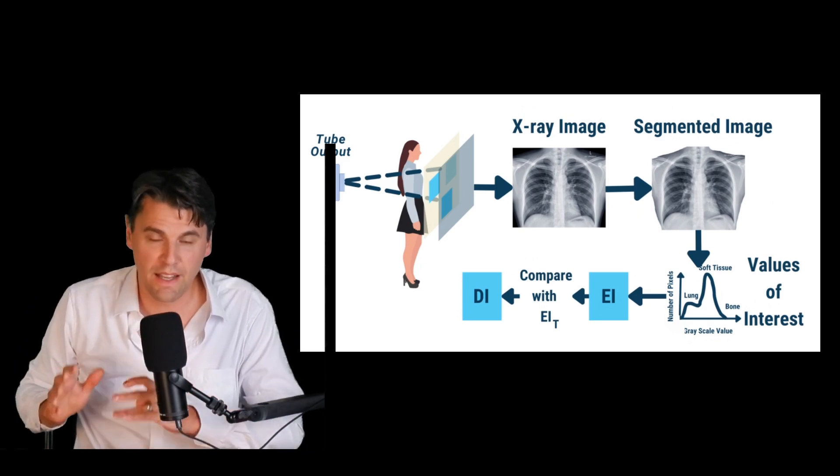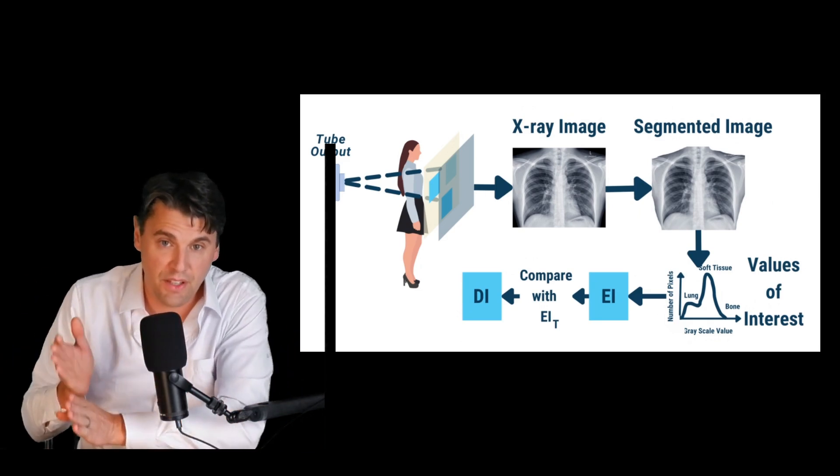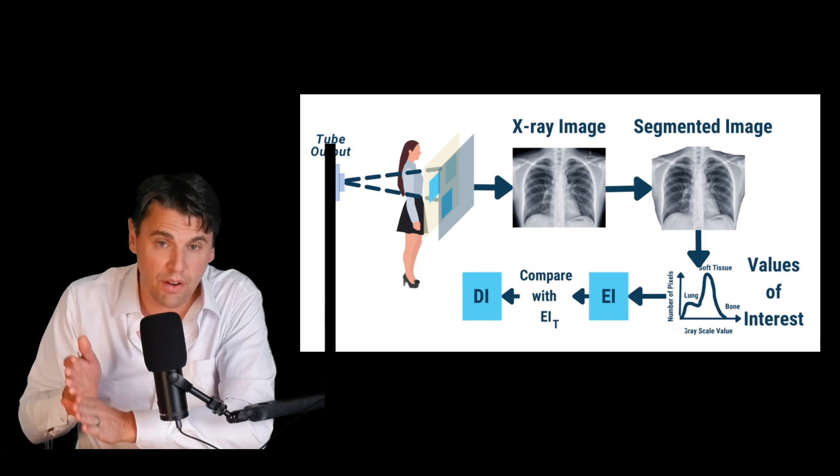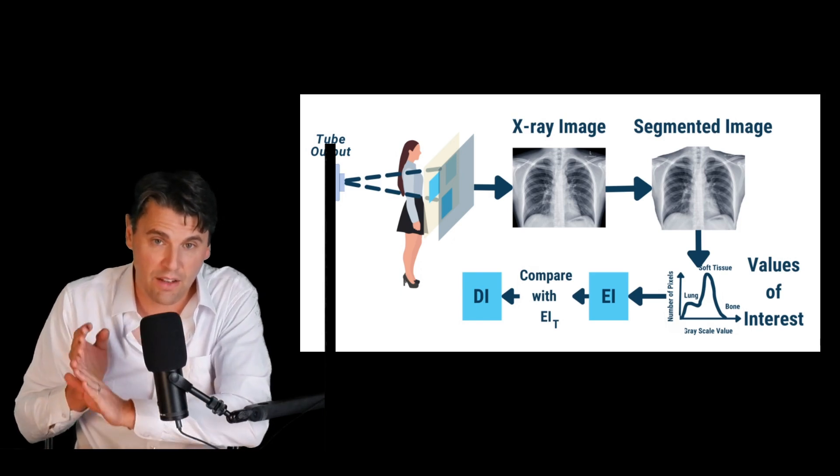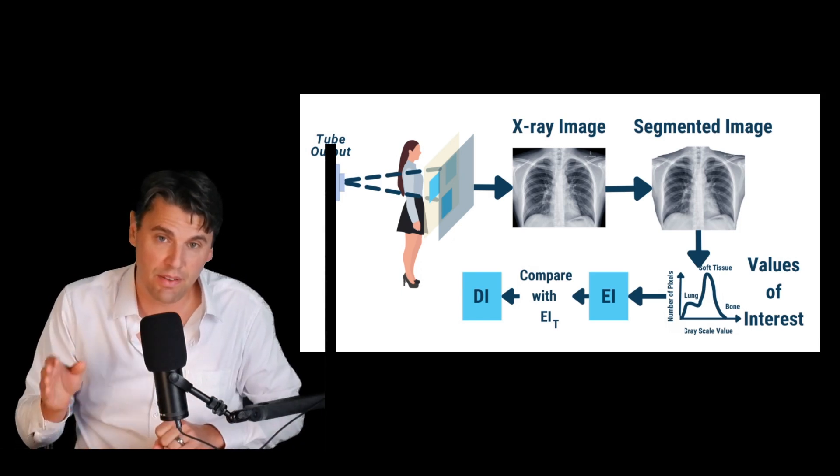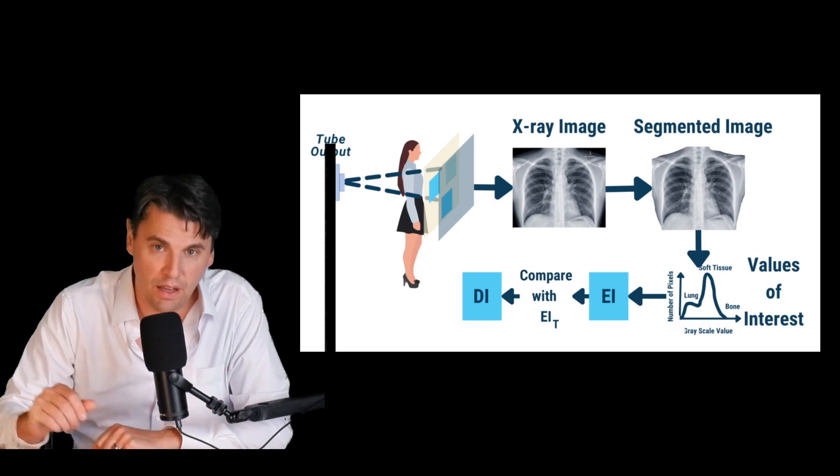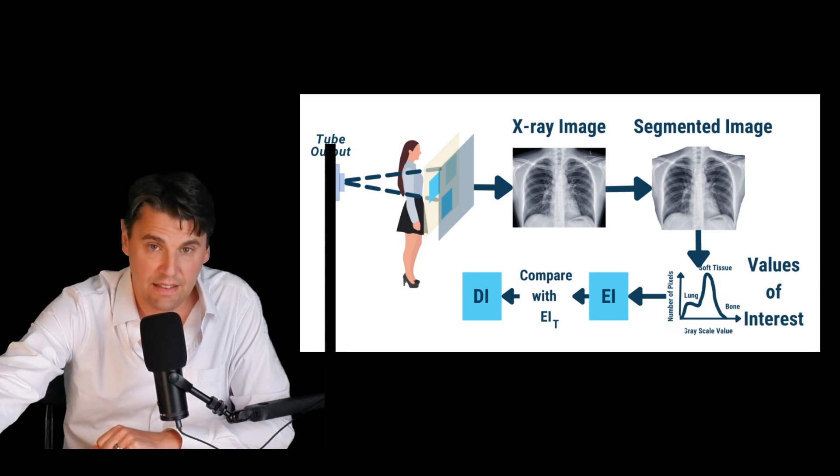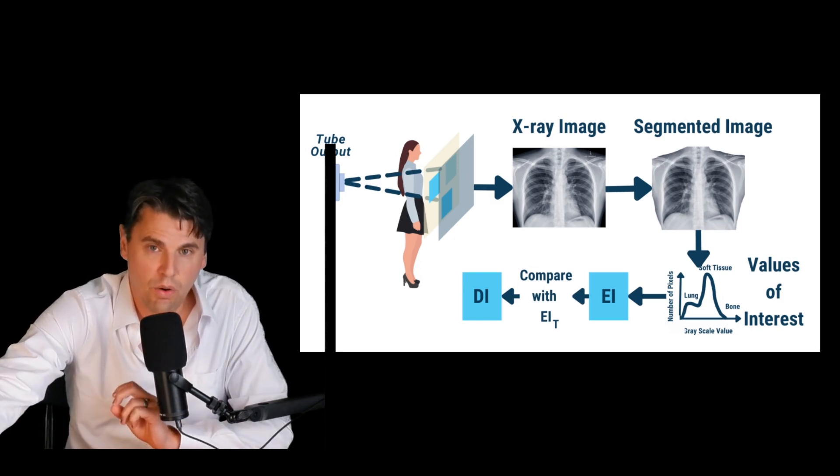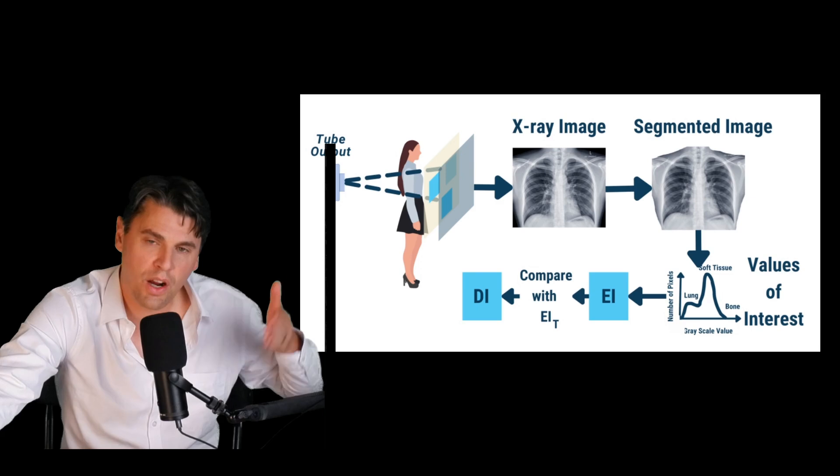The exposure index - we now have digital images, right? With our digital images, we can actually take the measurements from the detector and get what we can call an exposure index that can let us know how well we're doing with respect to what we're targeting for the exposure.